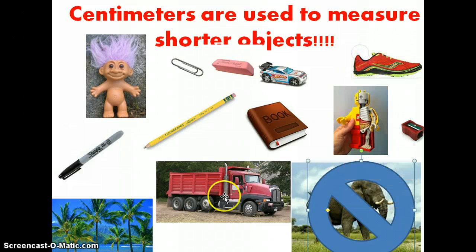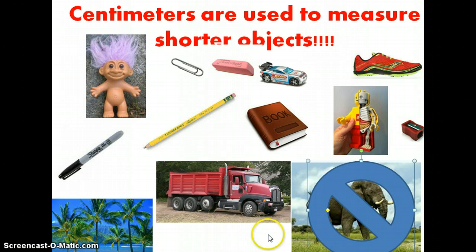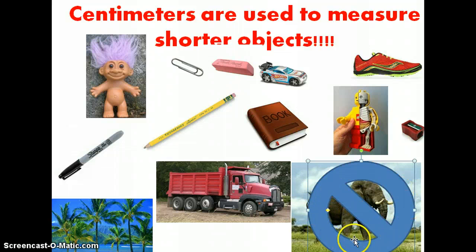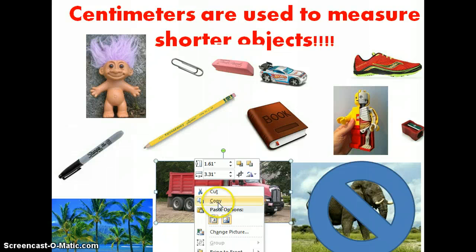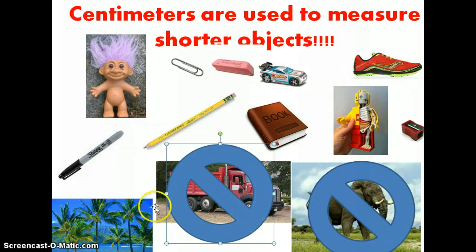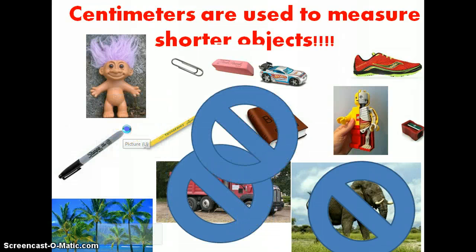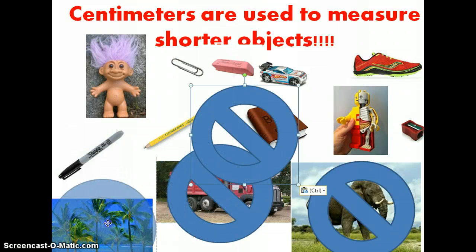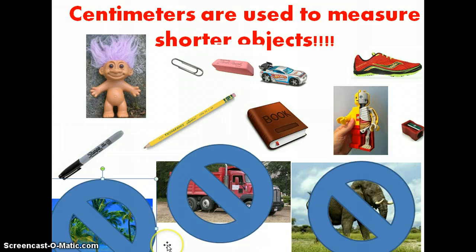Well, if you said the elephant cannot be measured with a centimeter, you're correct. It cannot be measured with a centimeter. Well, like I said, it can be, but it would be too difficult. It's easier to measure an elephant with meters, because it's larger. And if you said the truck, you're also correct. We would want to measure the truck with a meter stick, or meters. And if you said the palm tree, that's also correct. So, we would not measure any of these with centimeters. But the other objects can be, or should be, measured with centimeters, because they're shorter.